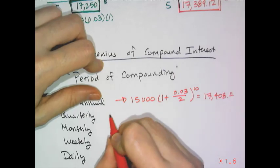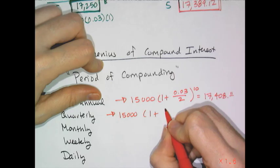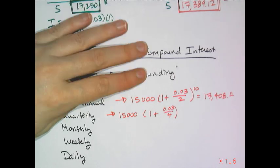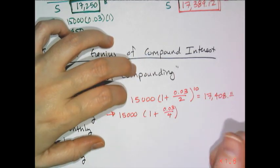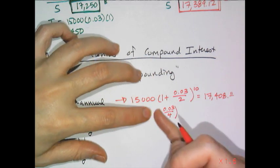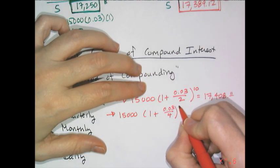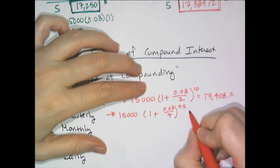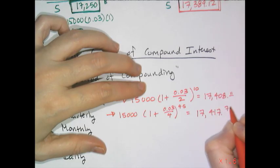For quarterly: take $15,000, divide the interest rate by 4, and calculate interest 4 times a year for 5 years — that's 20 times. That's why they call it the annual percentage rate: the percentages charged over the year add up to 3%. The quarterly result is $17,417.76.